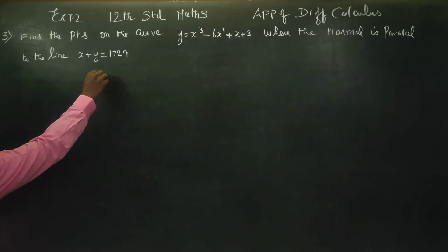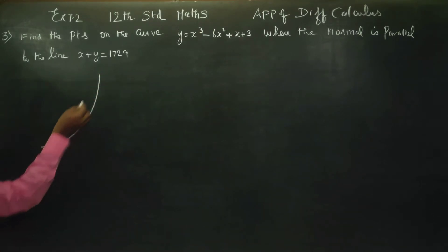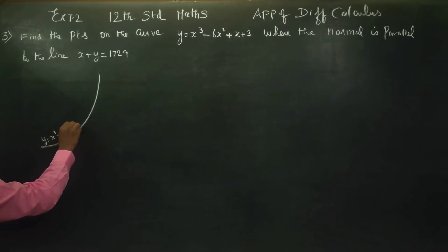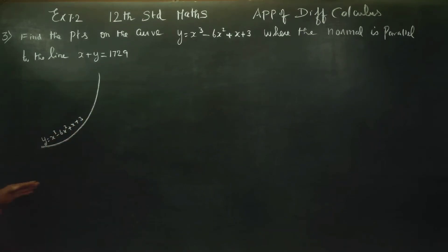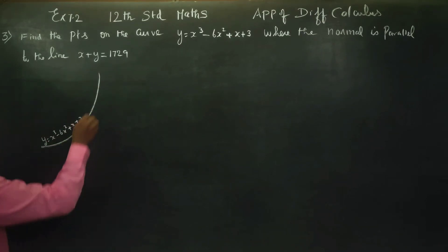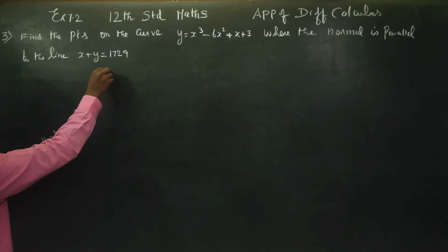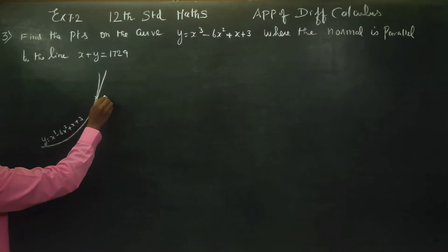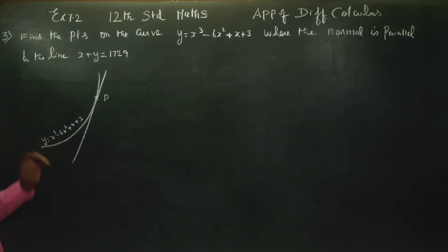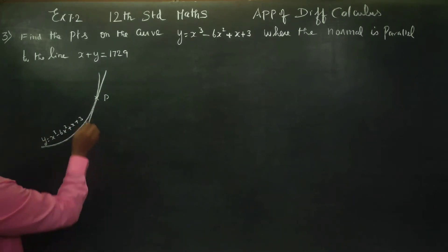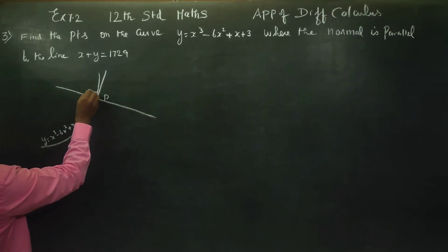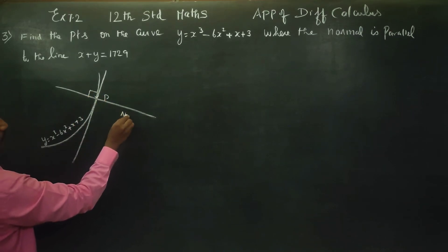There is one curve, and the curve's equation is y is equal to x cube minus 6x square plus x plus 3. At any point on the curve, there is a tangent. The line perpendicular to the tangent at that point is called the normal.